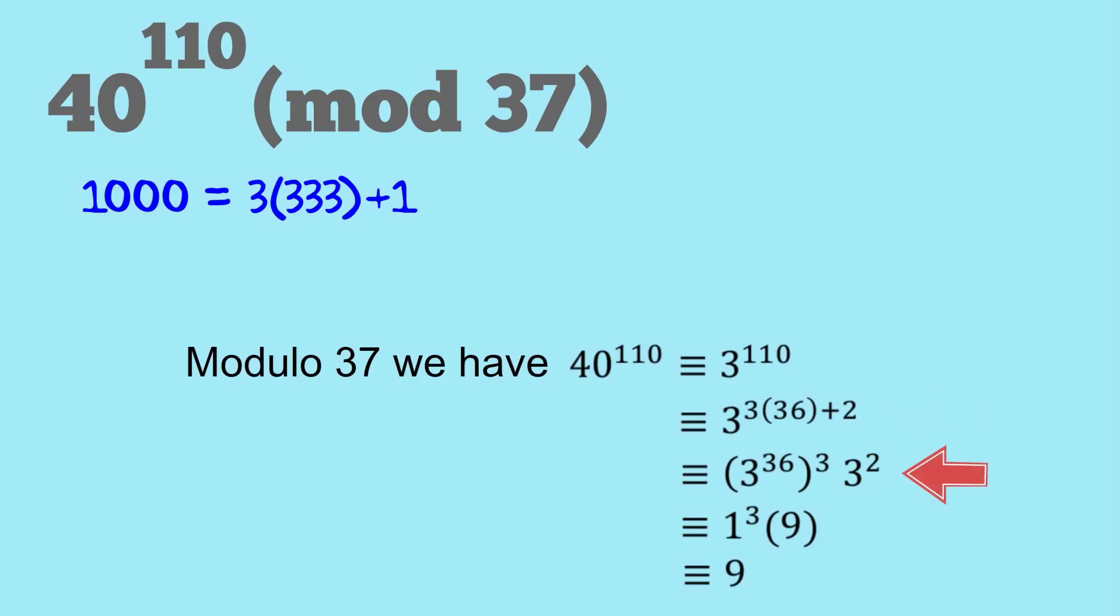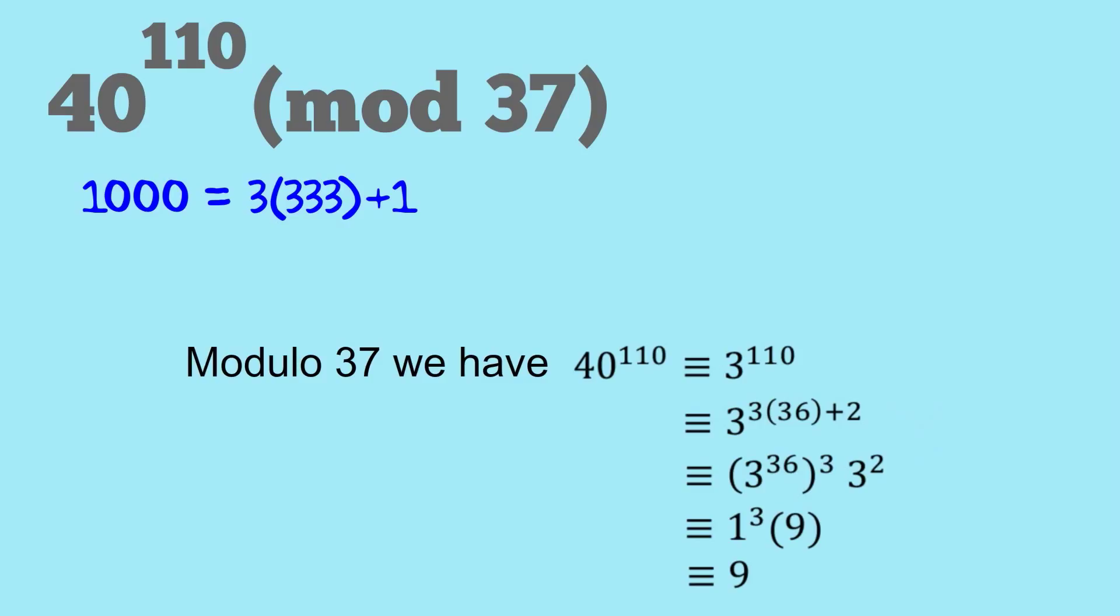So that's equivalent to 3 to the 36 all cubed times 3 squared, which is equivalent to 1 cubed times 3 squared, which is equivalent to 9.